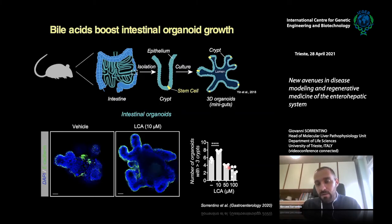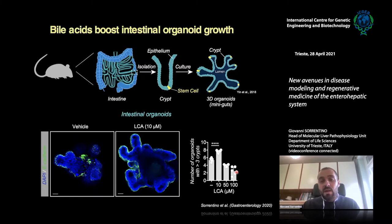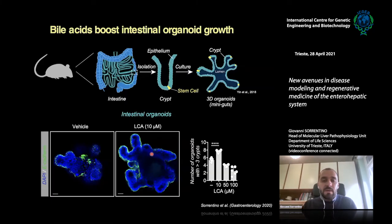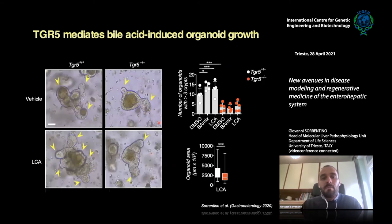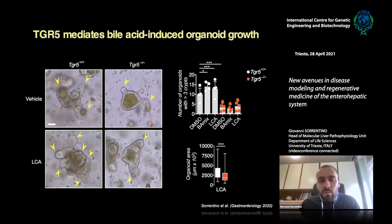To demonstrate that the effect on organoid growth depended on TGR5 signaling, we repeated the experiment using crypts from TGR5 knockout mice. When we generated organoids and treated them with bile acids in TGR5 knockout mice — where cells cannot respond to bile acids — we completely lost the positive effect on organoid growth, suggesting TGR5 activation is required for this phenotype.